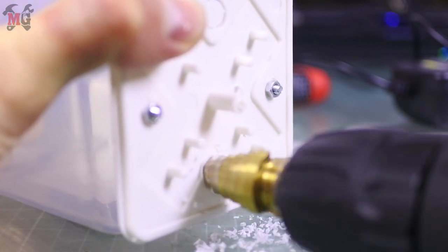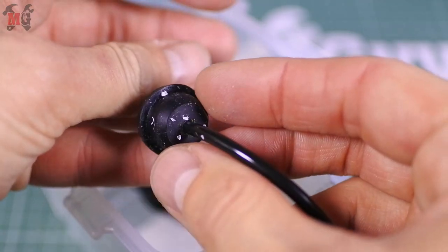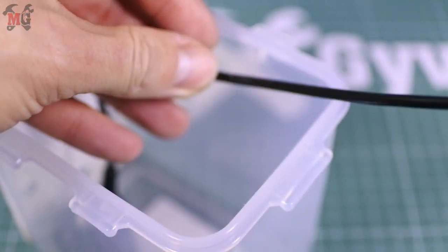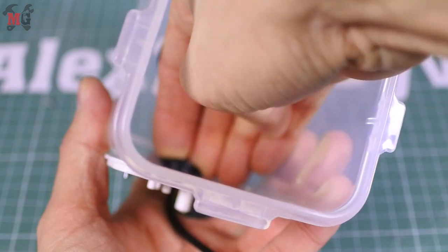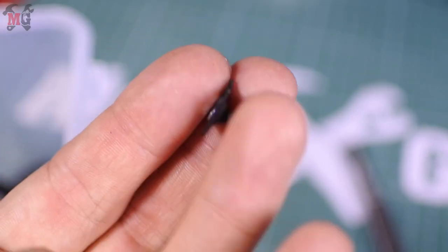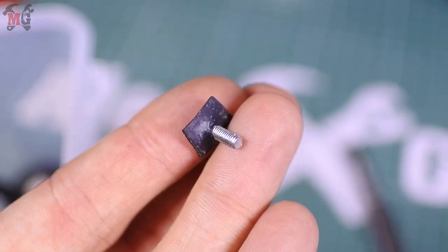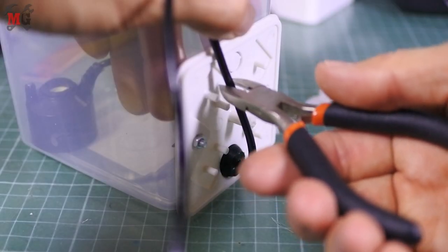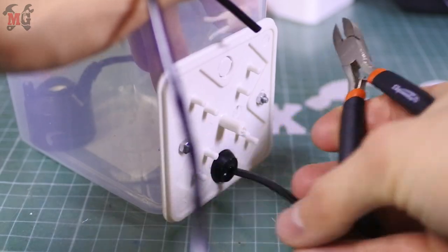You might ask, why drill such a large hole? Well, there is a soft rubber stopper on the wire of the evaporator that will ensure tightness. The screws fixing the box to the container are also sealed with pieces of rubber from a bicycle tube, and we will cut off the extra wire from the evaporator, leaving a small tail to connect.